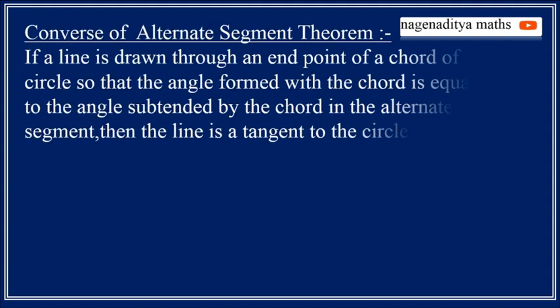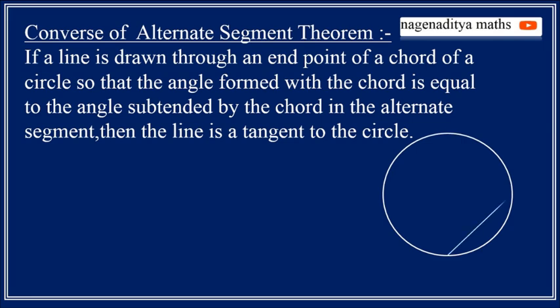The theorem is none other than converse of alternate segment theorem. If a line is drawn through an end point of a chord of a circle so that the angle formed with the chord is equal to the angle subtended by the chord in the alternate segment, then the line is a tangent to the circle.